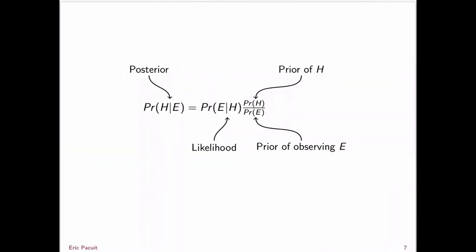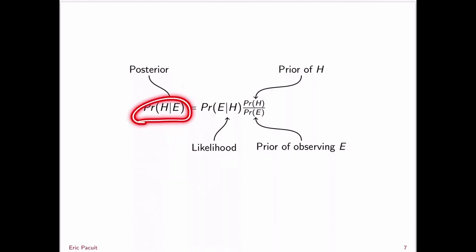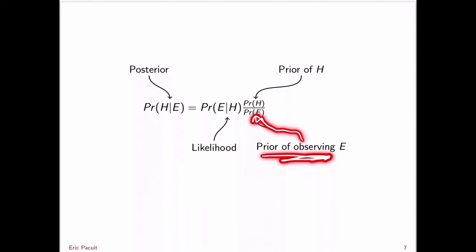We have specific terminology for the different parts of Bayes' theorem. Thinking of H as a hypothesis being tested and E as the observed evidence: the probability of H given E is known as the posterior probability of H after observing the evidence. The probability of E given H is called the likelihood — the likelihood of observing the evidence given the hypothesis is true. The probability of H is the prior probability of the hypothesis, and the probability of E is the prior probability of observing the evidence.